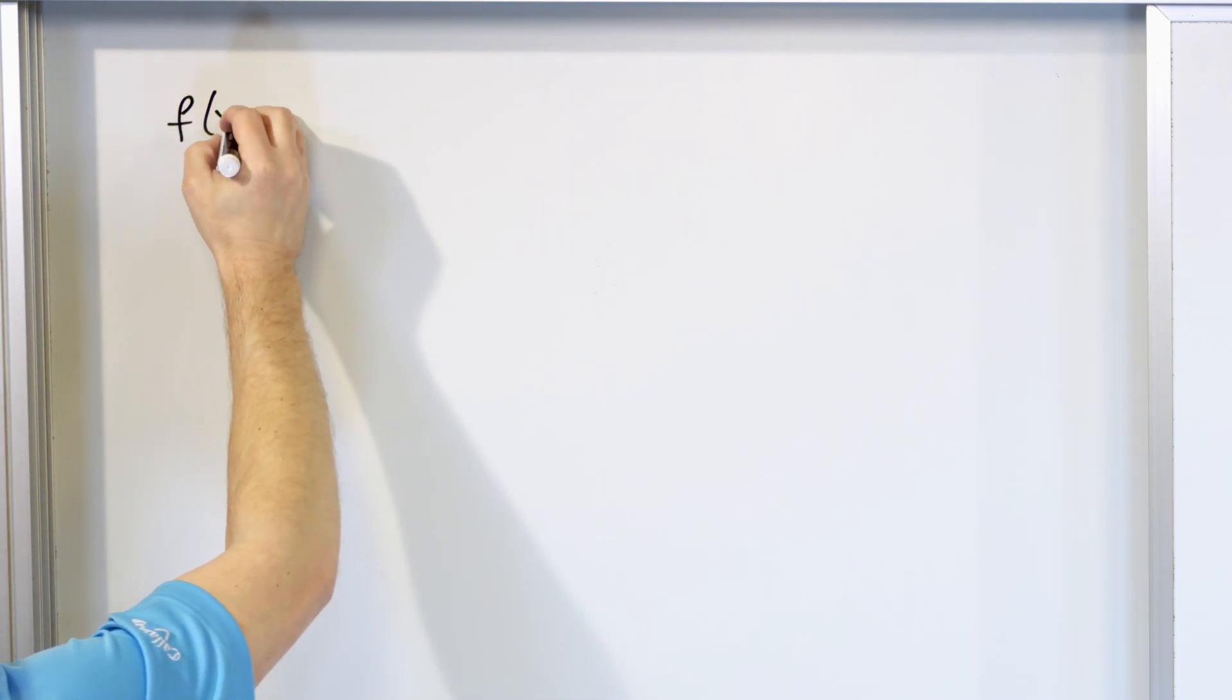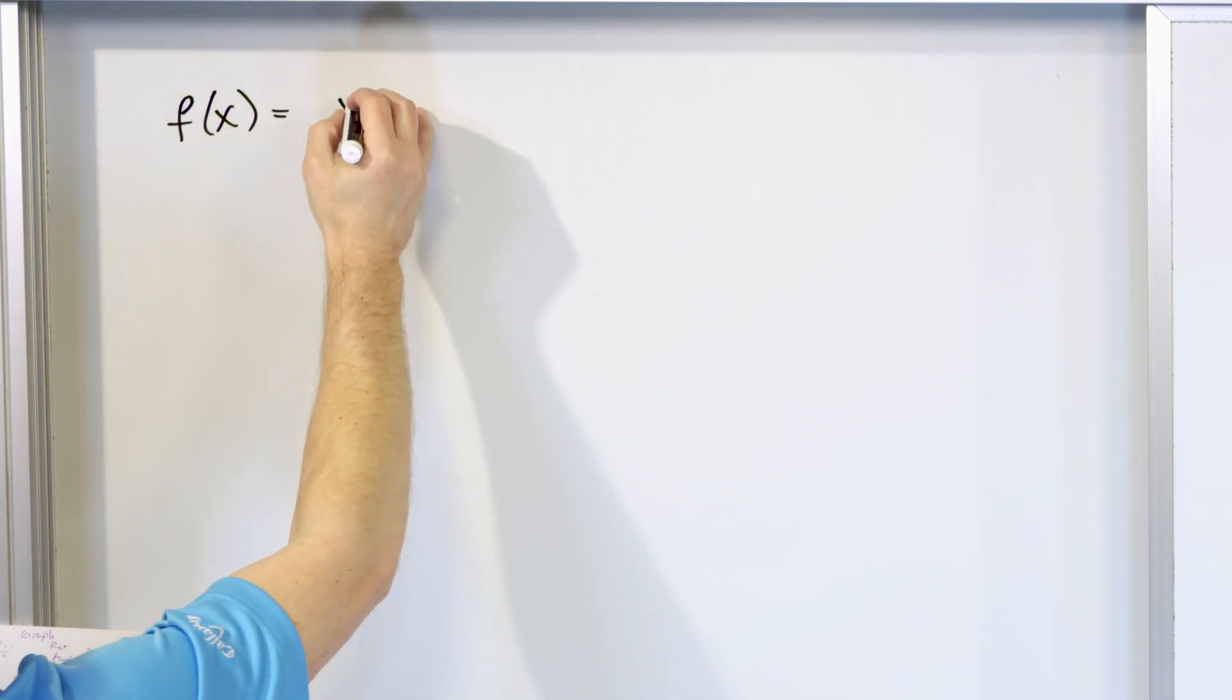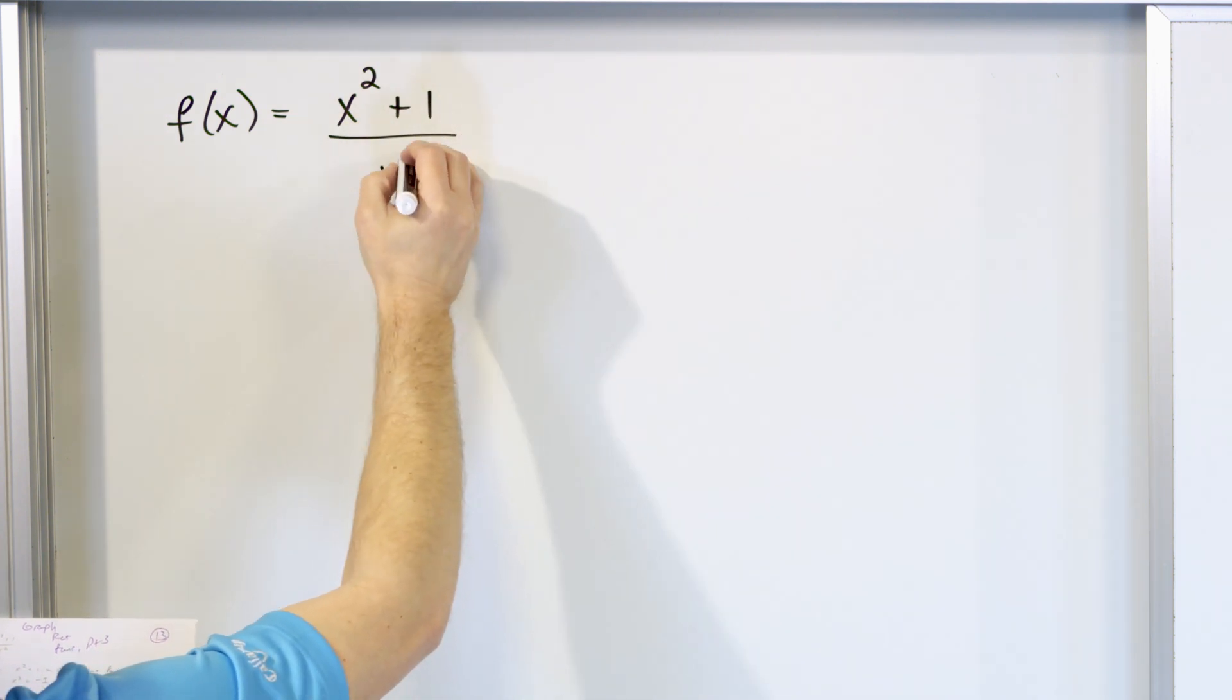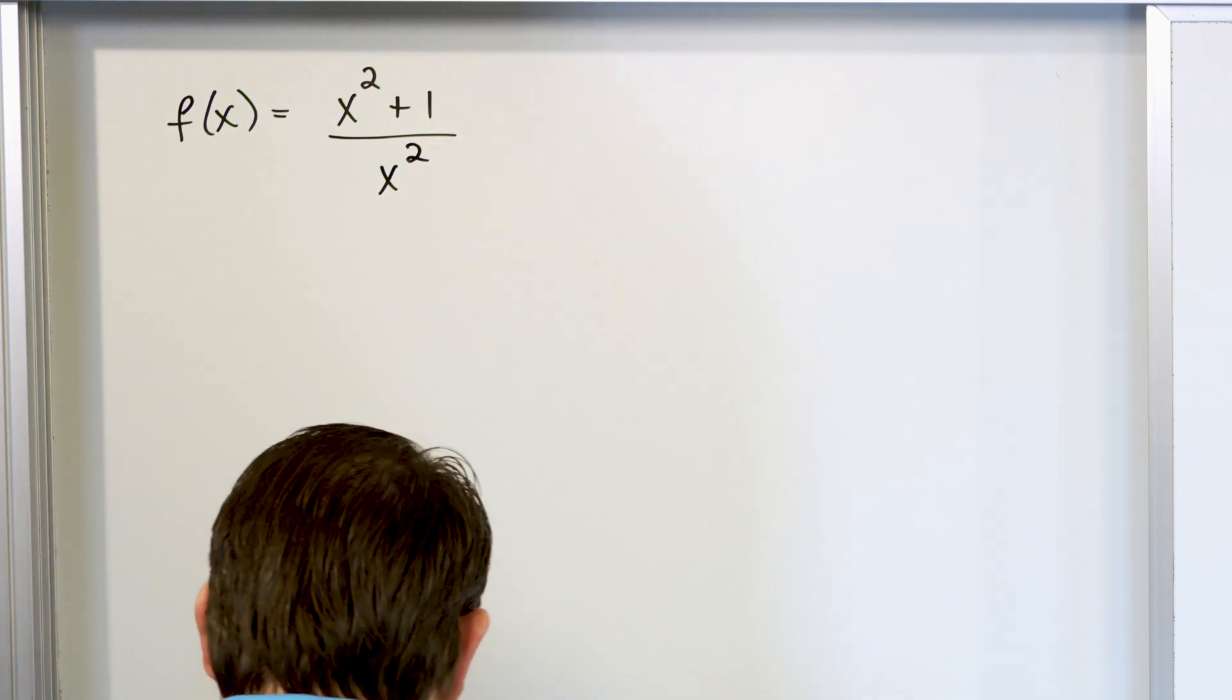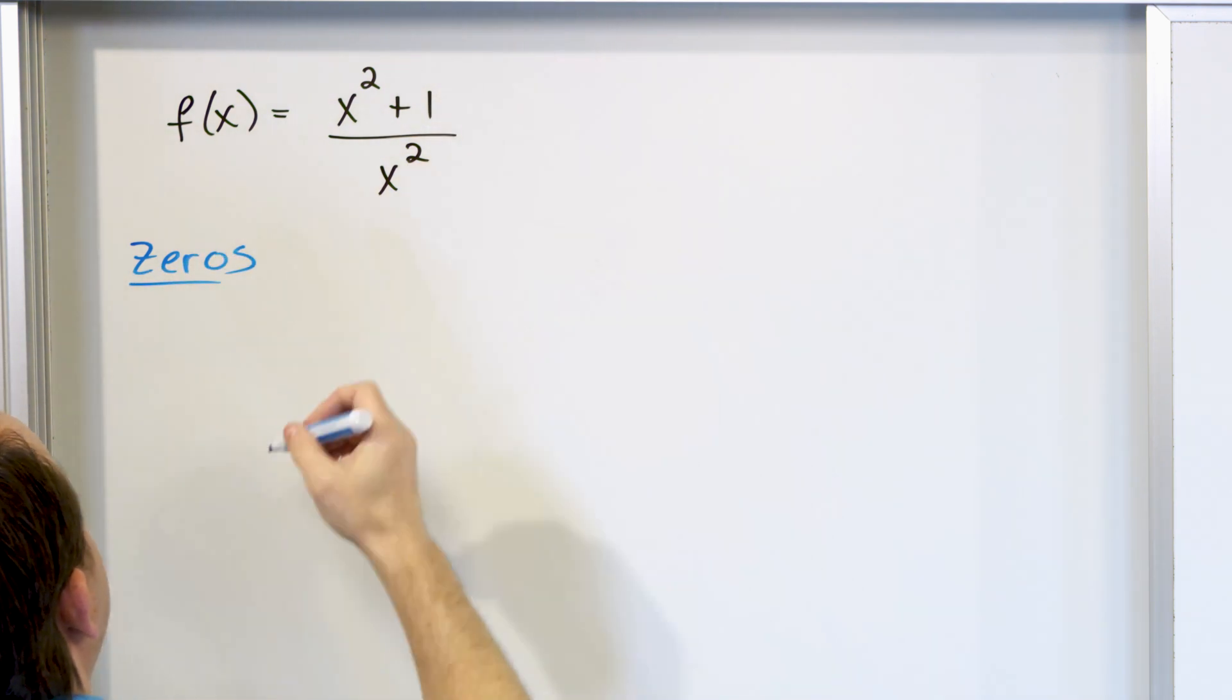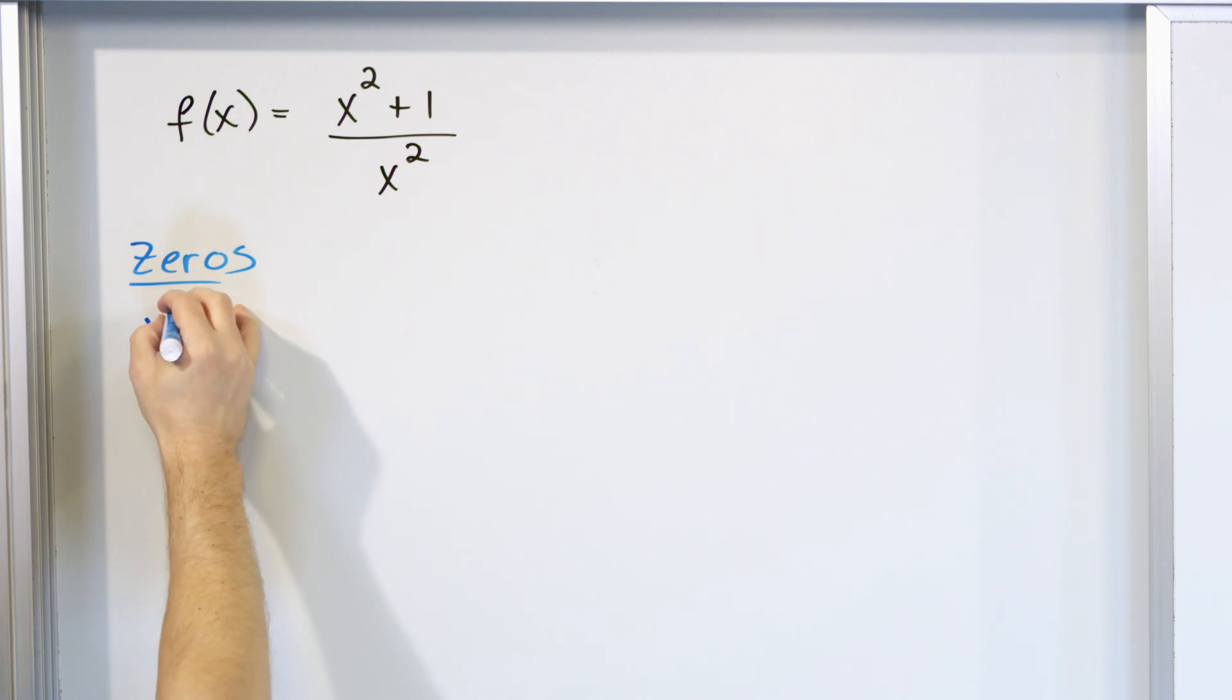Alright, so our first of two questions we have here is, what if f of x is equal to x squared plus 1 over x squared? So here's a rational function, and we're going to follow, as I said several times, the same exact process. First we're going to see, are there any zeros of this function? To figure out if there are any zeros, we take the numerator of the fraction and set it equal to zero, because that will drive the whole thing to zero.